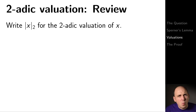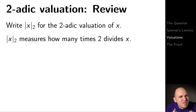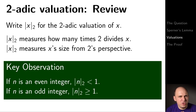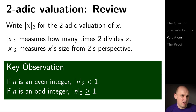We write absolute value bars with a subscript 2 to denote the 2-adic valuation of x. Morally, the 2-adic valuation measures how many times 2 divides x — the size of x from 2's perspective. The key observation we'll use is that parity is related to 2-adic valuations: for even integers, the 2-adic valuation is less than 1, and for odd integers, the 2-adic valuation is greater than or equal to 1.